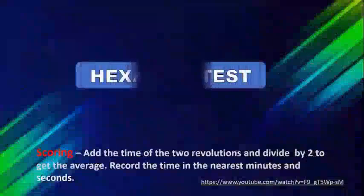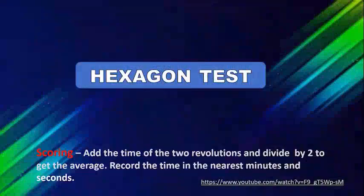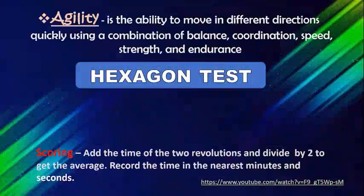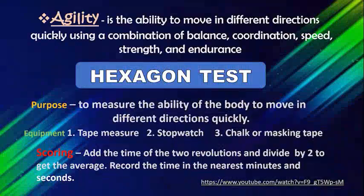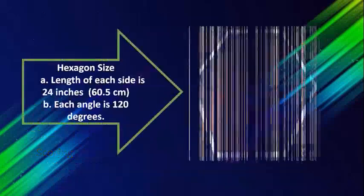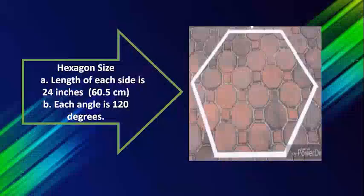The hexagon test will measure one's agility — the ability to move in different directions quickly. Record the time you complete the proper revolution. Add the times of the two revolutions and divide by two to get the average score. This is the proper size of the hexagon.